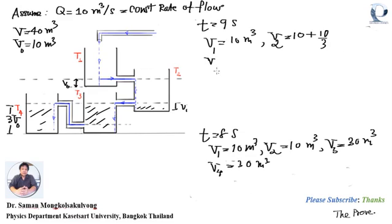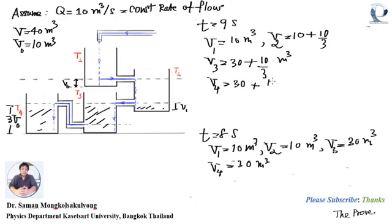V3 is still equal to 30 plus 10 over 3 mq.